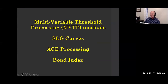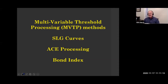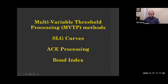Here are some other terms. We have something called multivariable threshold processing methods, MVTP. Someone with a big company makes it up — it makes sense: you're using more than one variable to process a log. But MVTP gets thrown around and people move away. The same is true for an SLG curve, which stands for solid-liquid-gas, or ACE processing — a very simple process but it can confuse you. And then bond index, which is much more popular.